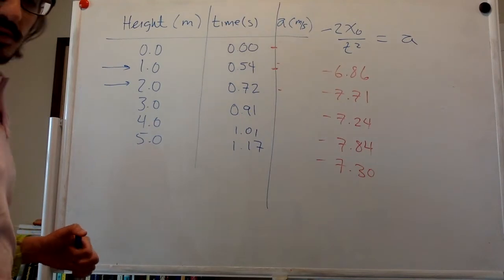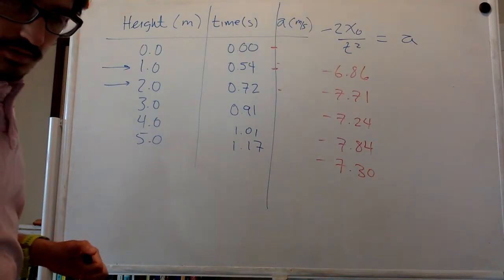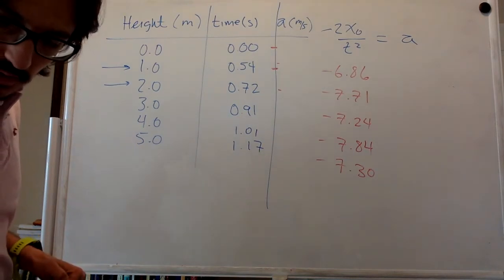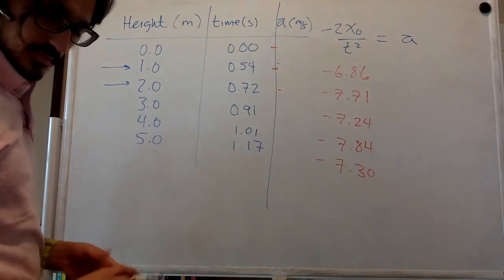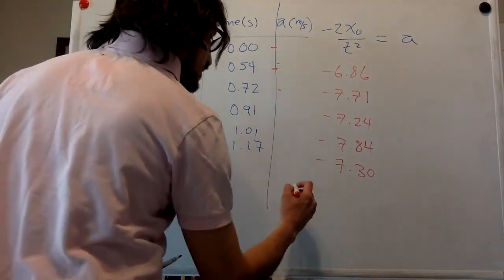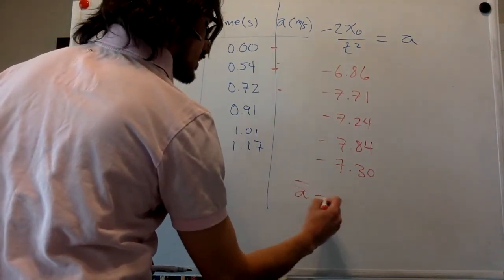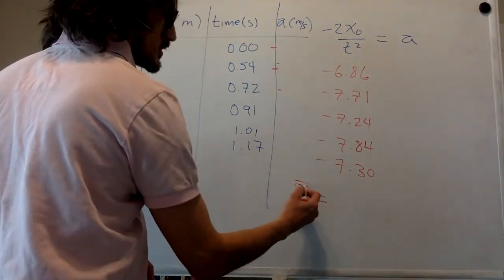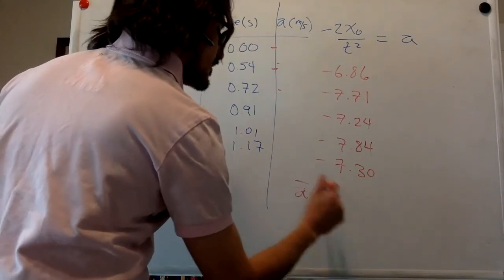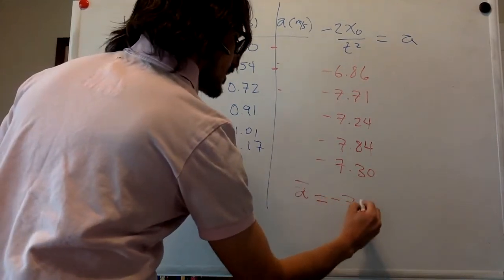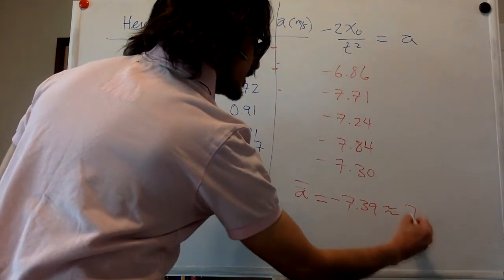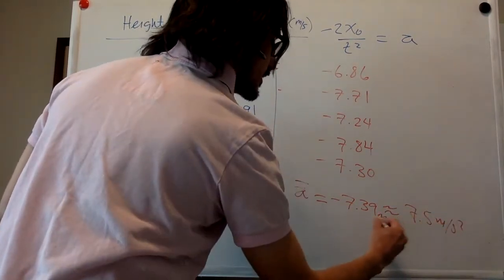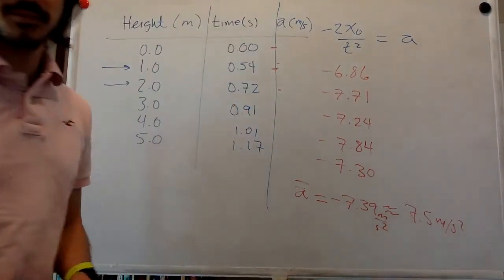So taking the average, which I already did, I got 7.39. This is average is not vector. Although it's also a vector. Which is approximately equal to the 7.5 meters per second squared in the answer.